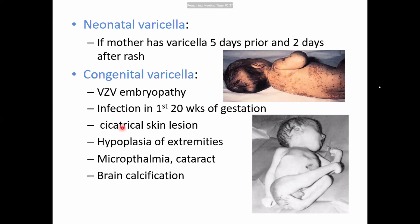Congenital varicella features include skin lesions with cicatricial scarring and fibrous band formation, limb deformities with hypoplasia of extremities, microphthalmia, cataracts, and intracranial calcification. The most common features are limb deformities, skin scarring, eye abnormalities such as microphthalmia and cataract, and brain calcification.